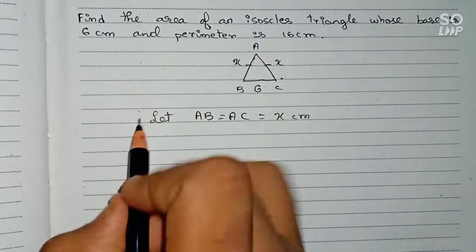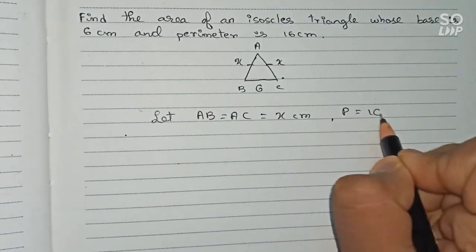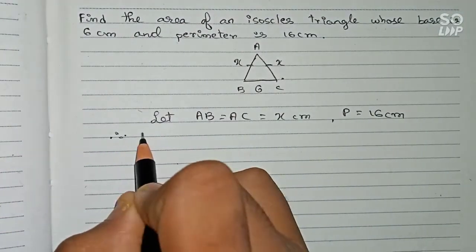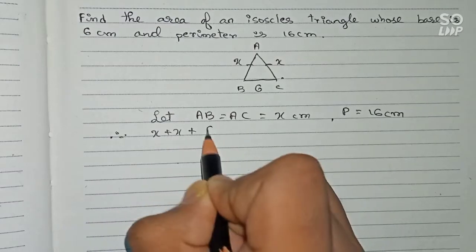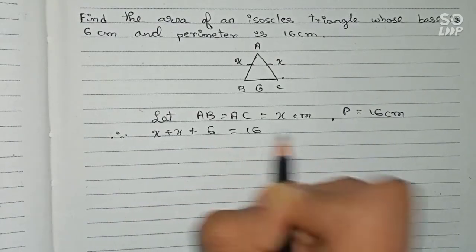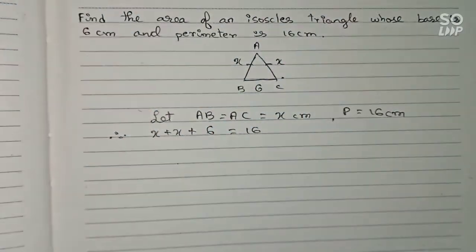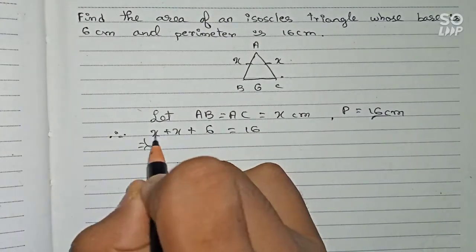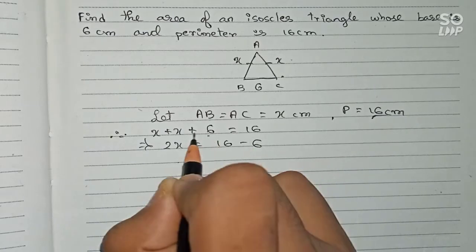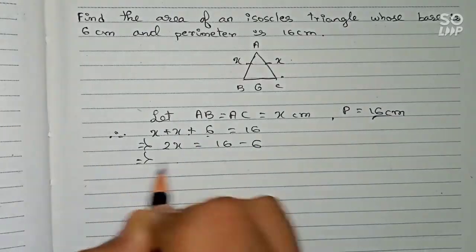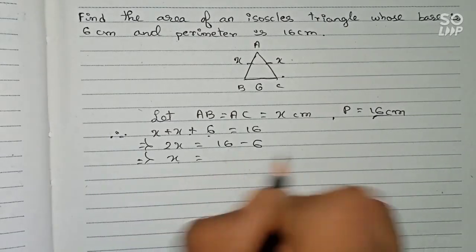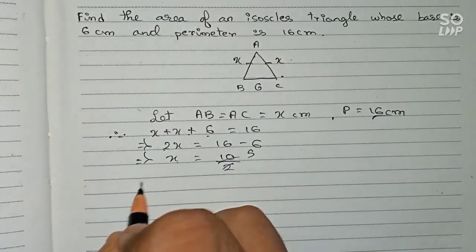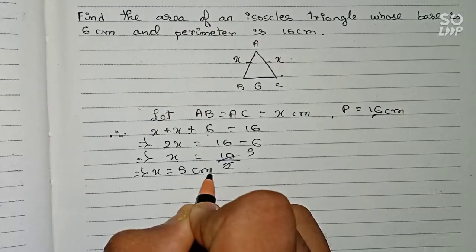The perimeter is also given as 16 centimeters. Therefore we can write: x plus x plus 6 equals 16. So 2x equals 16 minus 6, that is 10, divided by 2 equals 5. So x equals 5 centimeters.